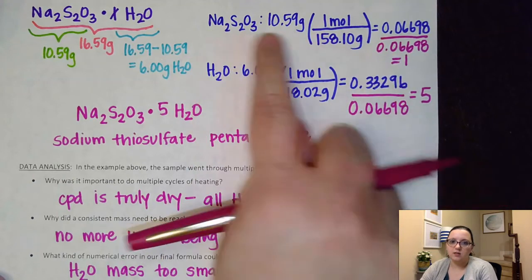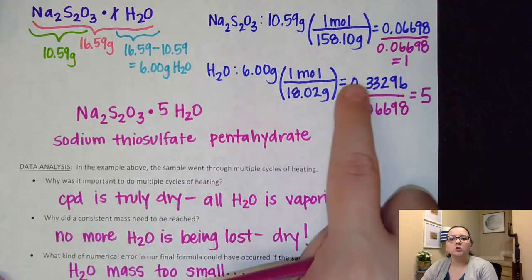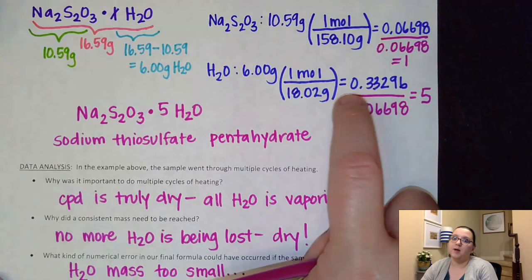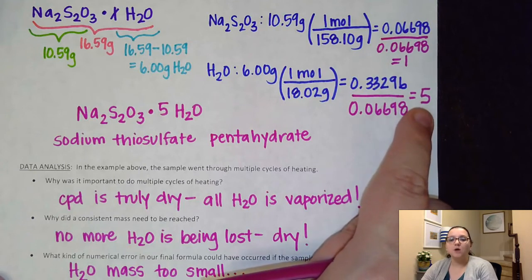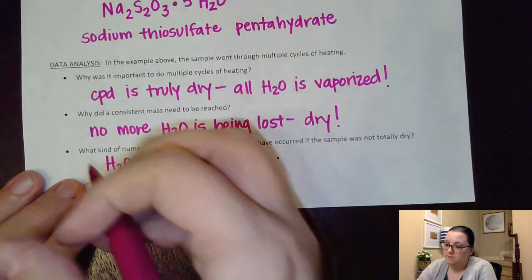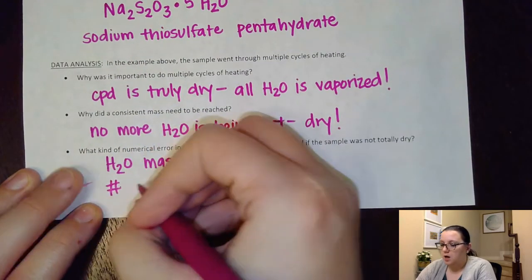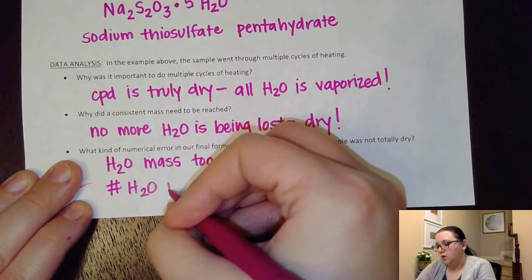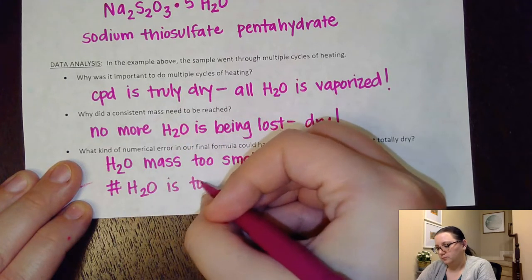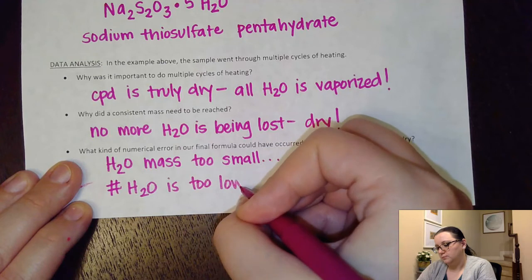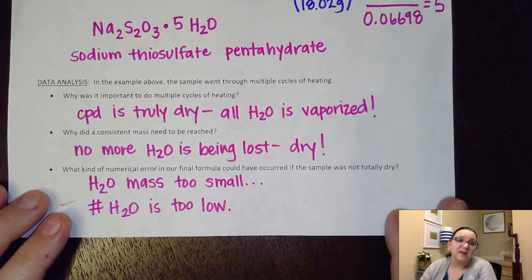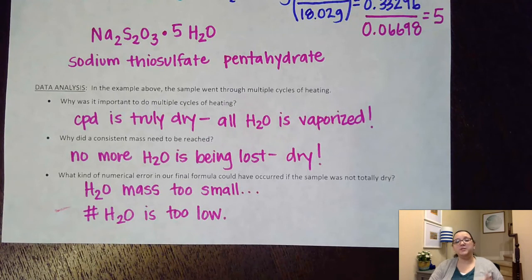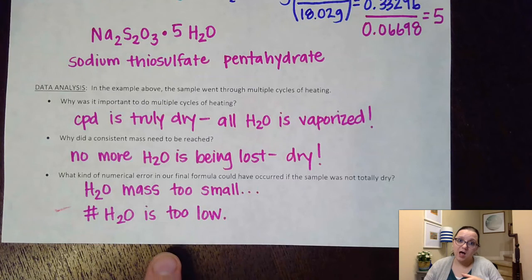Not only that, but then this moles of the Na2S2O3 would have been too big. So when I divide that too small number by the too big number, I end up with the number of waters that is smaller than what I was anticipating. So that means the number of waters is too low. And so that's a very common error that we see on this particular lab.